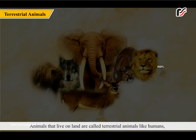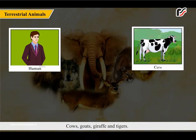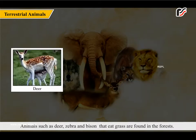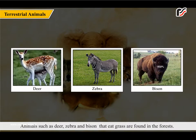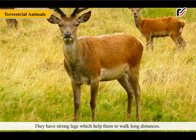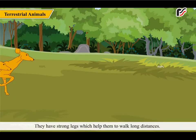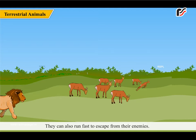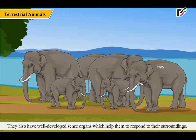Animals that live on land are called terrestrial animals, like humans, cows, goats, giraffes and tigers. Animals such as deer, zebra and bison that eat grass are found in the forests. They have strong legs which help them to walk long distances. They can also run fast to escape from their enemies. They also have well-developed sense organs which help them to respond to their surroundings.